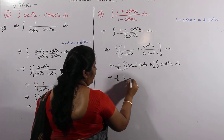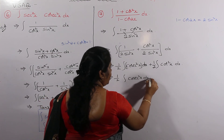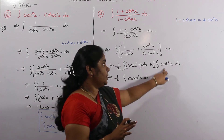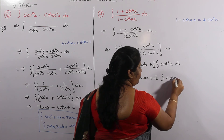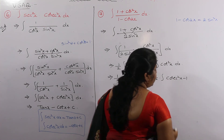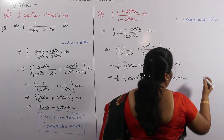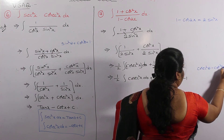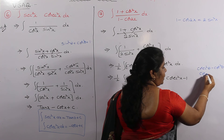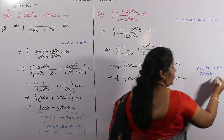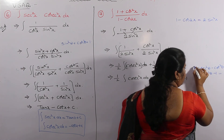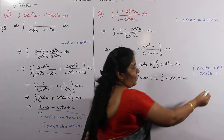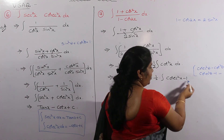So we have 1 over 2 times integral of cosecant squared x dx, plus 1 over 2 times integral of cot squared x dx. We don't have a direct formula for cot squared x, so we use the identity: cosecant squared theta minus cot squared theta equals 1, which gives cot squared theta equals cosecant squared theta minus 1. So cot squared x can be written as cosecant squared x minus 1.